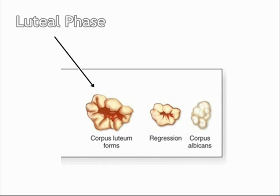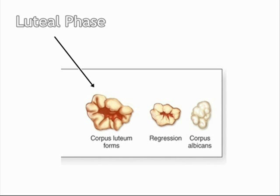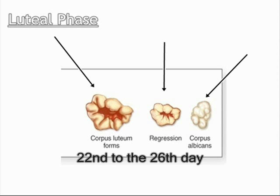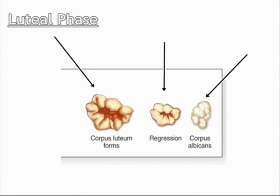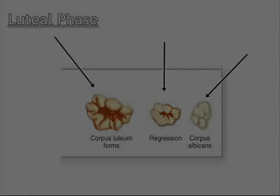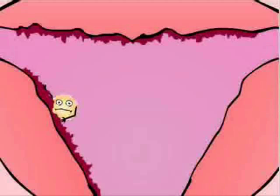The cells of the corpus luteum are capable of producing the hormone progesterone, which, like estrogen, acts on the endometrium. The level of progesterone reaches a peak at the 22nd to the 26th day of the cycle. The regression of the corpus luteum follows, and this cycle goes on and on inside the female's body.